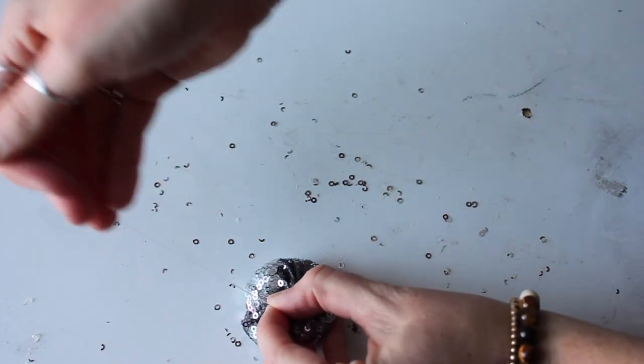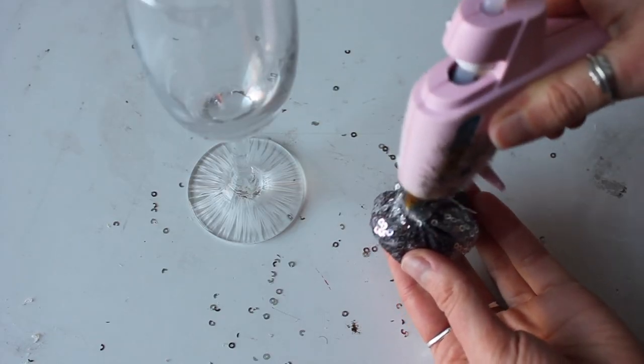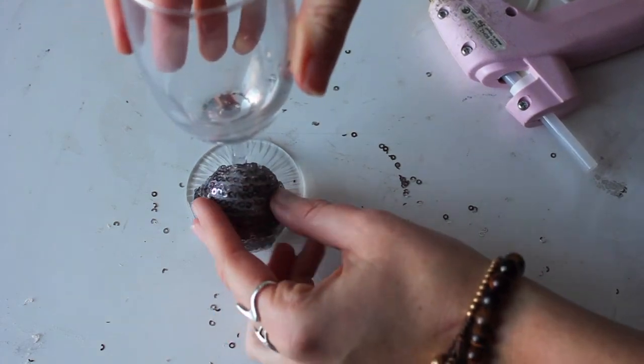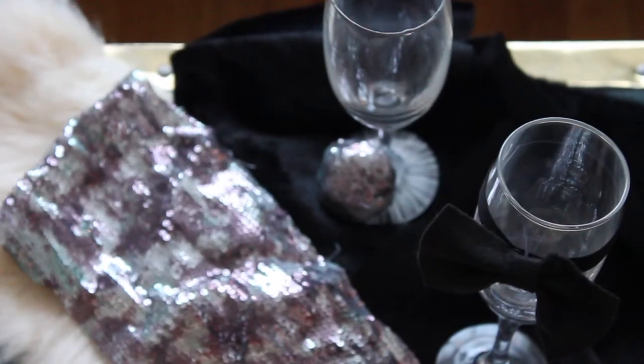Now the way that I attached it to my glass was with a hot glue gun. That should actually come off really easily, but you could always tie it up around there as well.